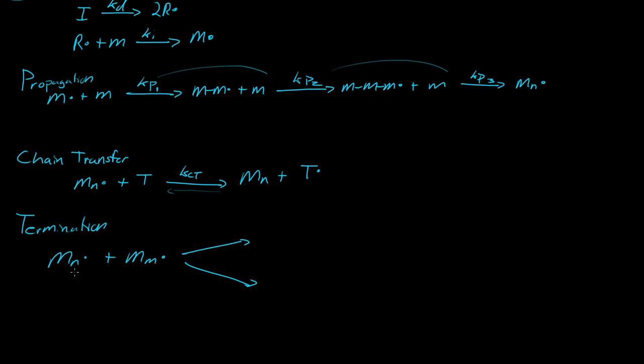They can react where they just neutralize each other. And what we call that is KTD, or the kinetic constant is KTD, termination by disproportionation, where we get monomer N plus monomer M. They just took away each other's radical. And that is disproportionation.